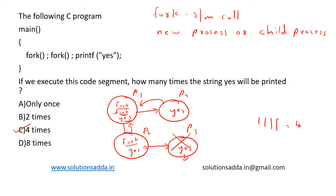So the correct answer is option C, four times. So one important formula is if there are n fork statements...